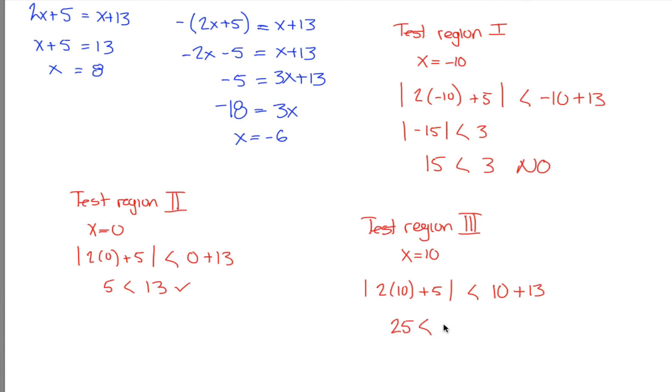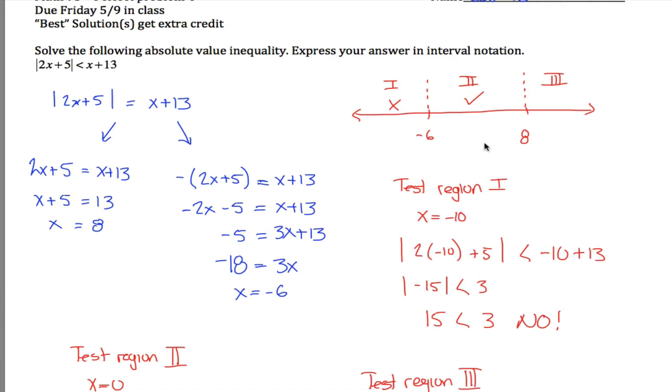25 less than 23, no, that doesn't look right. Close, but not quite, no. So that's not true. 10 is not a solution. So none of these numbers are solutions. So the only solutions are the numbers between negative 6 and positive 8.